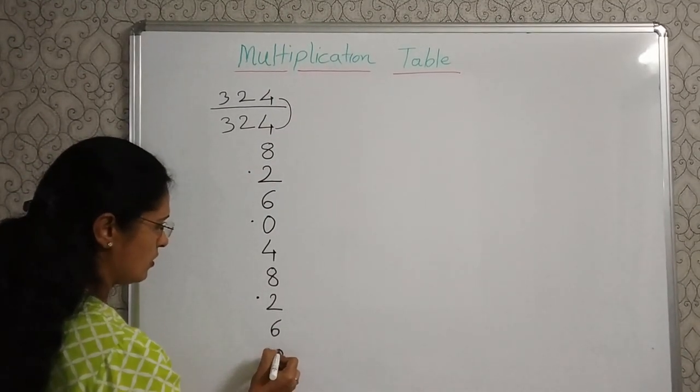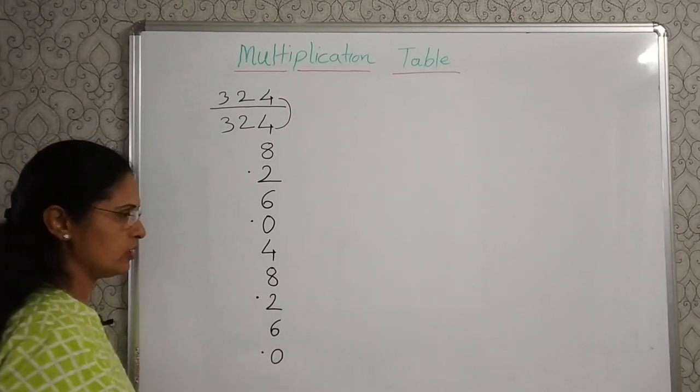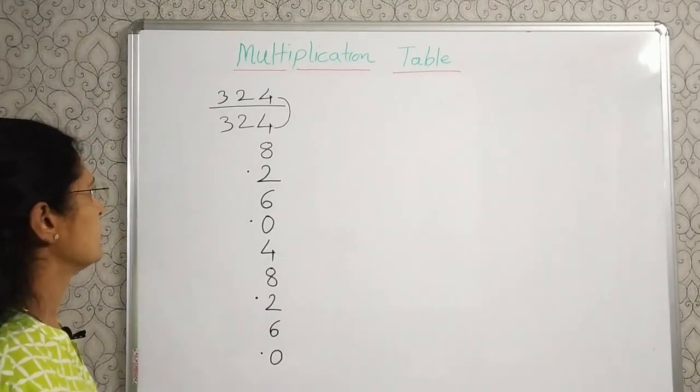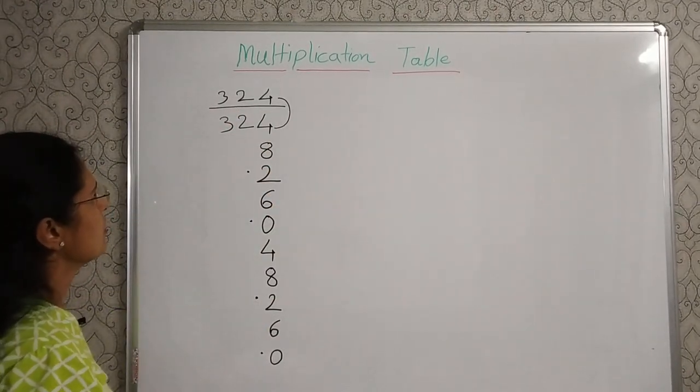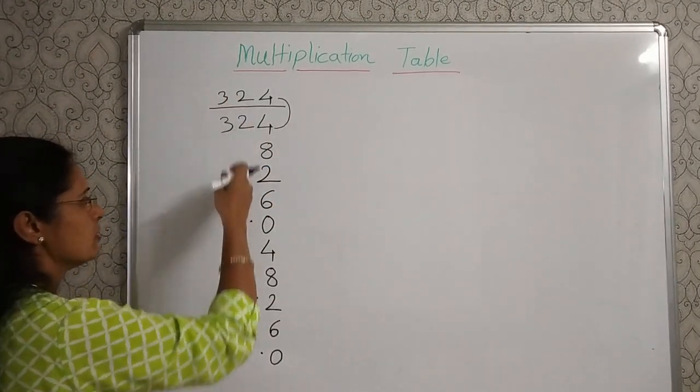2 plus 4, 6. 6 plus 4, 10. Now give a dot here for the carry over. After completing the ones place we'll do the tens place.